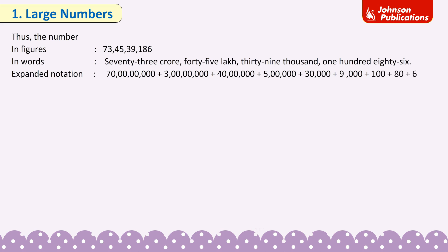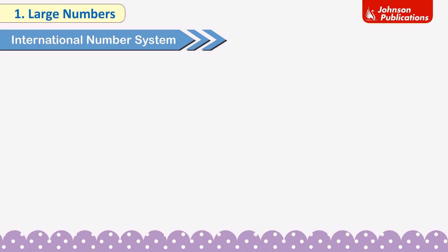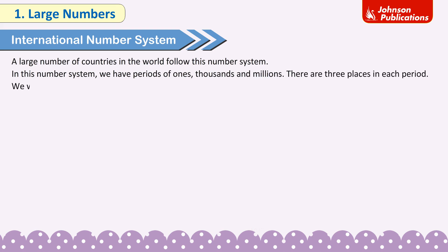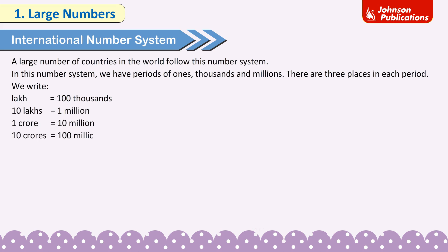International number system: A large number of countries in the world follow this number system. In this system, we have periods of ones, thousands, and millions, with three places in each period. We write: 1 lakh = 1,00,000; 10 lakhs = 1 million; 1 crore = 10 million; 10 crores = 100 million.